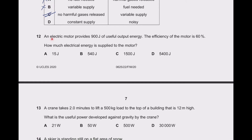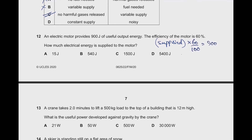Question 12: an electric motor provides 900 joules of useful output energy and efficiency is 60%. The supplied energy: 60% of supplied energy equals 900 J, so supplied energy equals 900 × 100 / 60 = 1500 joules. That is the right answer.